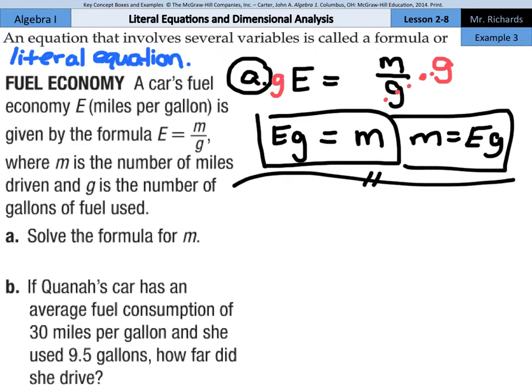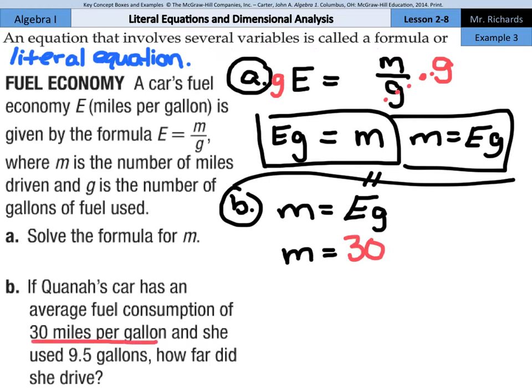What about part B? If Quanta's car has an average fuel consumption of 30 miles per gallon, and she uses 9.5, or 9 and a half gallons, how far did she drive? Well, we've already set up this equation for M, and that's what we're solving for. So if we use M equals E times G, we can say, okay, M is going to equal, our miles per gallon was 30, and that's what's going in for E. We used 9.5 gallons, so 30 times the 9.5. And so our miles is going to equal 285 miles.